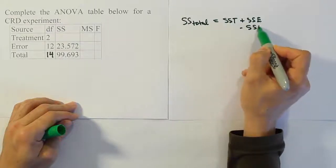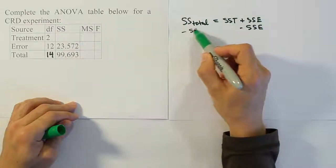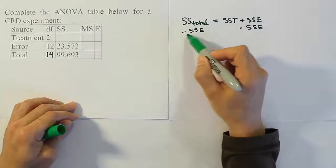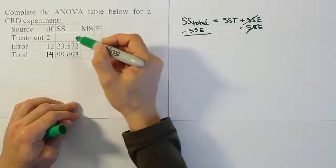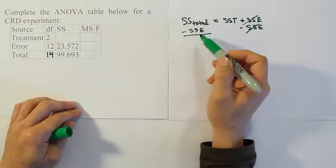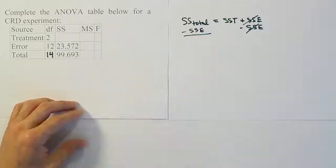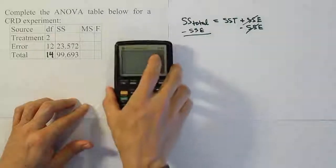If I subtract SSE from both sides of this equation, then I will end up with, on the right-hand side, SST, which is actually what we're looking for here. So, let's take the total sum of squares and subtract off the error sum of squares, and that will give us our answer for SST.